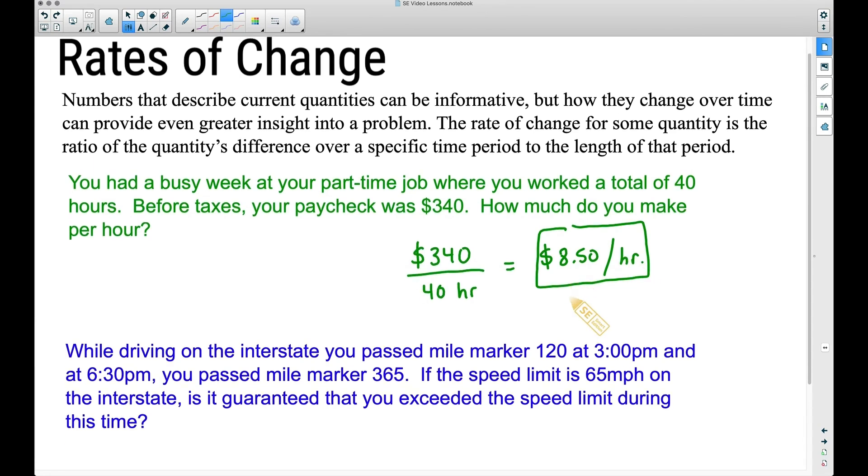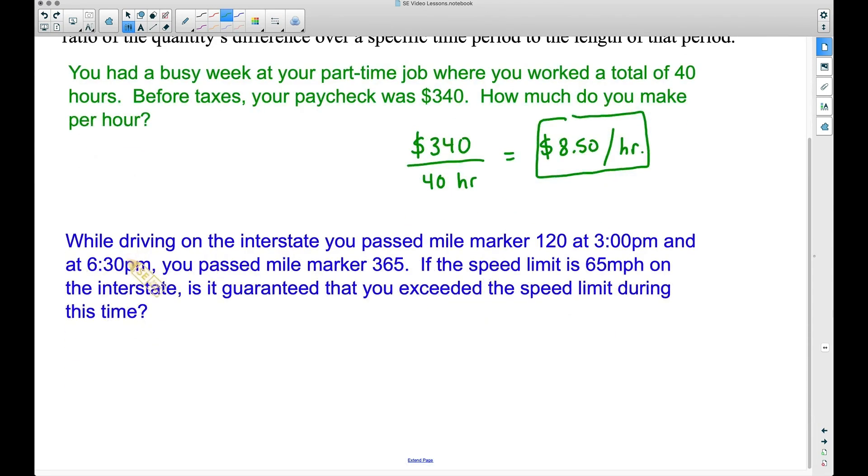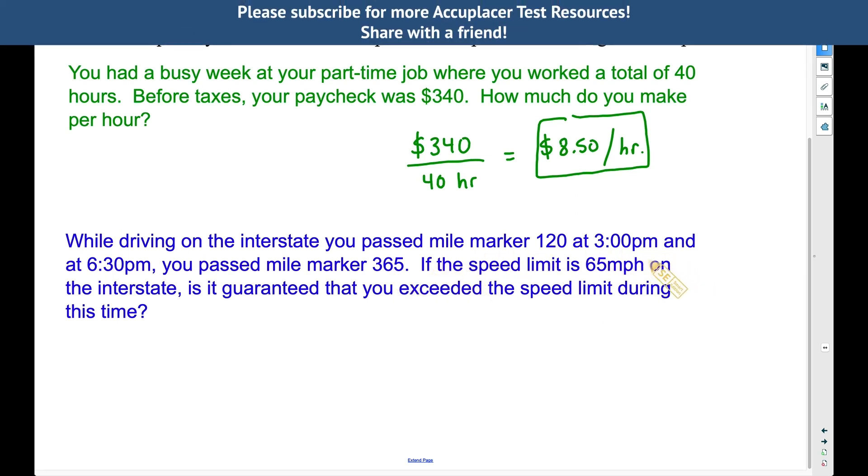Now that's a basic example. Let's look at one that's a little bit trickier. While driving on the interstate, you passed mile marker 120 at 3 p.m. and at 6:30 p.m. you passed mile marker 365. If the speed limit is 65 miles per hour on the interstate, is it guaranteed that you exceeded the speed limit during this time?